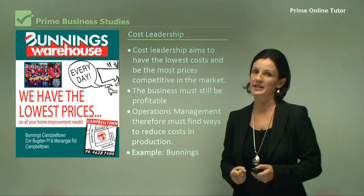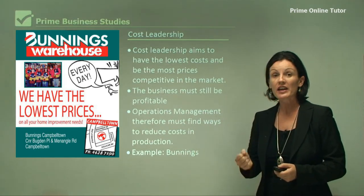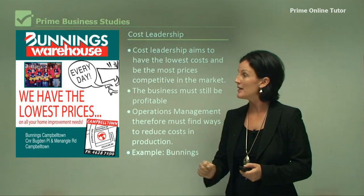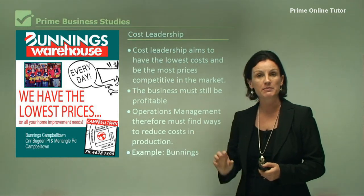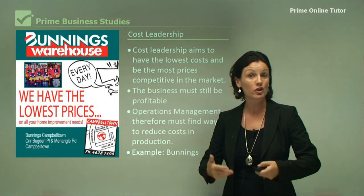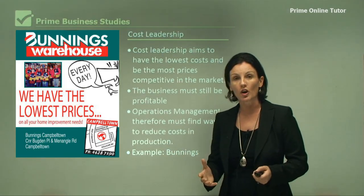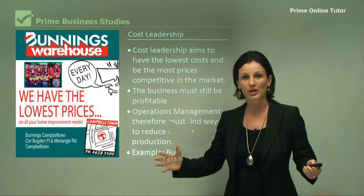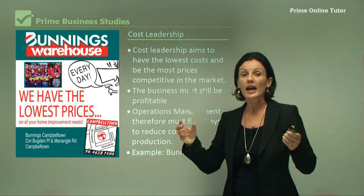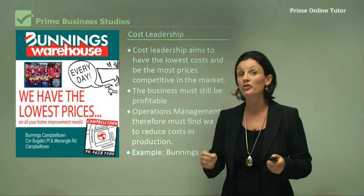Now Bunnings is a fantastic example. We all know Bunnings from their marketing. They have saved a lot of money on their marketing — their marketing is very simple and basic. They use their own employees in the advertisements; they're not using actors and they're able to cut costs. Bunnings also use very large premises. They have a lot of their goods in the store, and therefore they save money on their land.